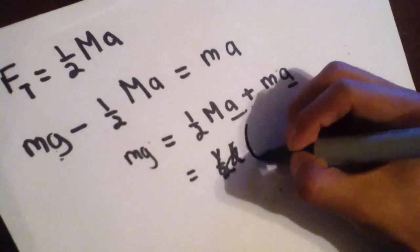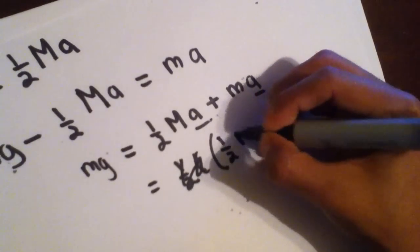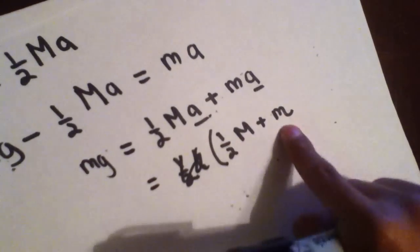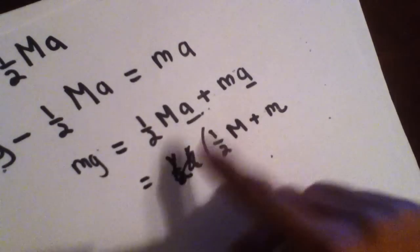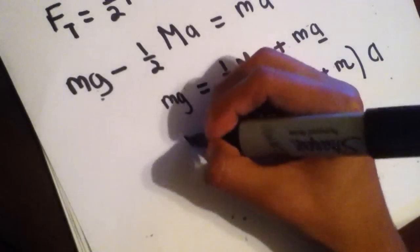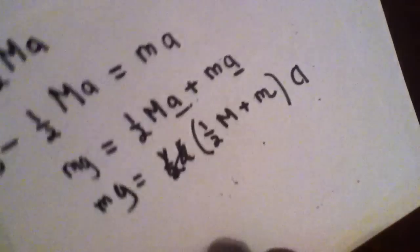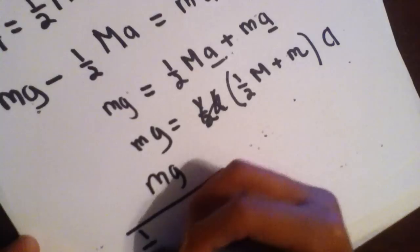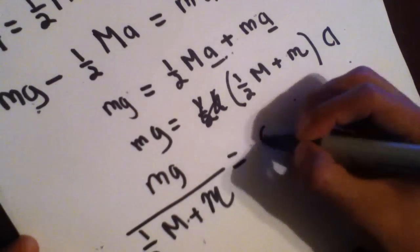Sorry. Sorry for the sloppiness. I messed up. One-half M plus M. Notice these aren't, these M's aren't the same. This is the mass of the block, and that's the, this big M represents the mass of the disc of the pulley. And then acceleration. And M G. So then just simply divide this over there to solve for A. And M G. One-half M plus M equals A.